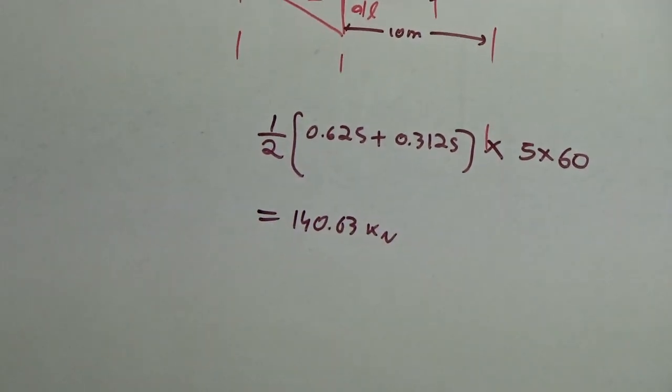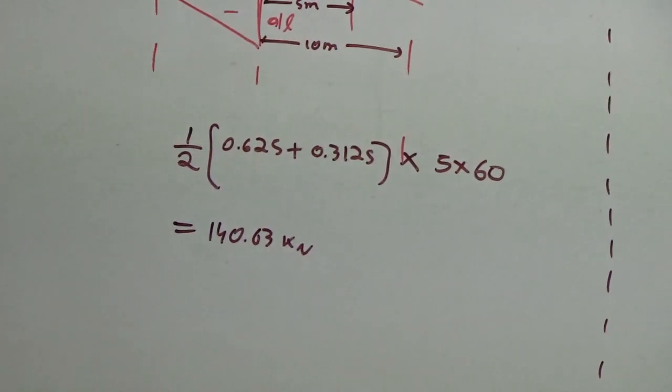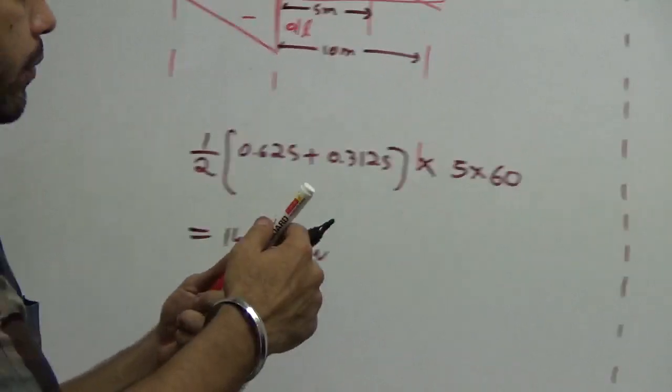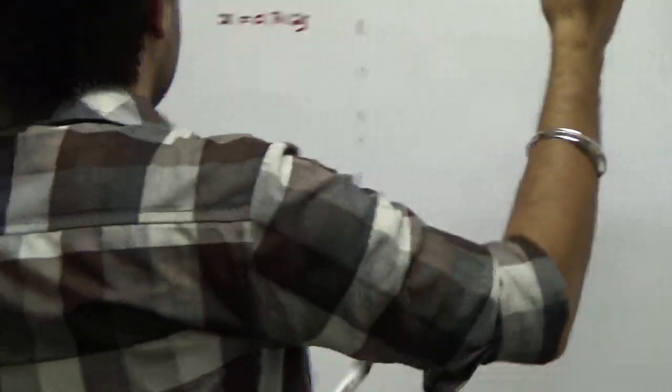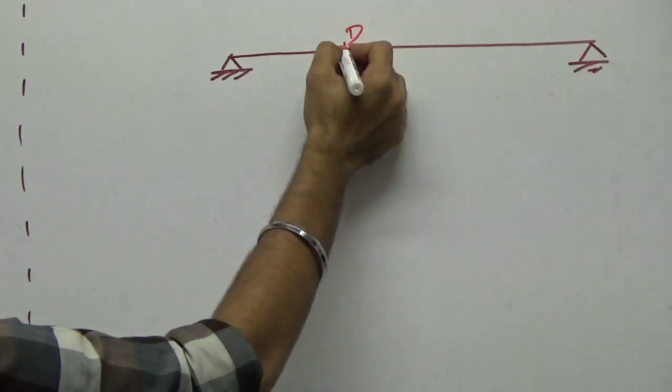So 140.63 kN is the maximum positive shear force at D. Now let's look at the next part — finding the maximum negative shear force.